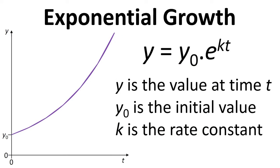It's also special because you can use it for exponential growth with this equation: y equals y naught times e to the kt. y is a particular value that changes over time, y naught is the initial value at the start of the process, and k is the rate constant.